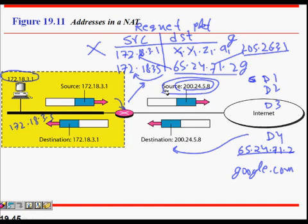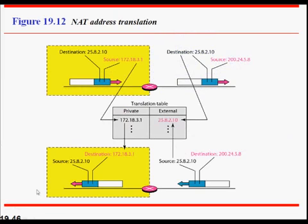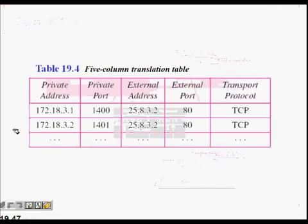We should extend this table. First the source was that of NAT address, destination remains the same, but I add this private address here and external address is this. When the reply comes back, destination is that of NAT, but I find from here that based on this source I know this was the one who requested the reply.